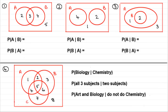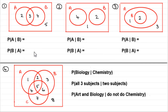Hi. In this tutorial, what I want to show you is how we can work out conditional probability from Venn diagrams. Conditional probability is where we have the probability of something, say A, given — that vertical line — another outcome, say B. So probability A given B, or probability of B given A, and so on.